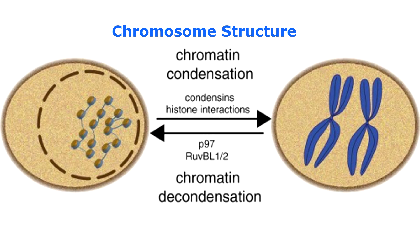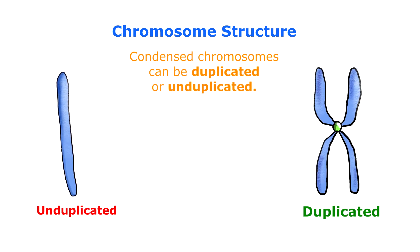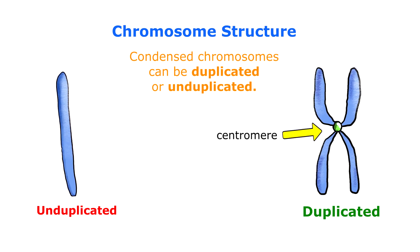Condensed chromosomes can also be either unduplicated or duplicated. With duplicated chromosomes, the original chromosome and its duplicate are attached to each other by a structure called a centromere, which is shown right here in this image.